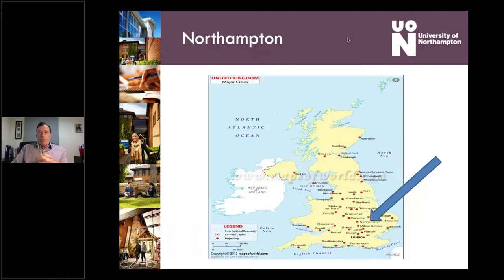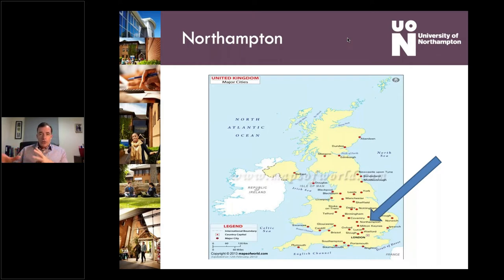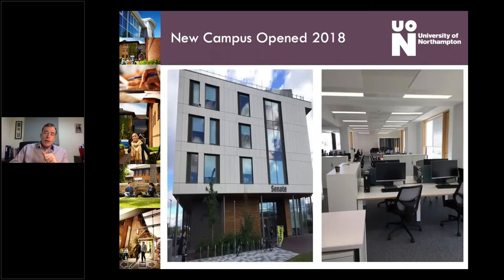Just before I get to the DBA program, let me tell you a little bit about Northampton and the university, because most of you probably haven't been there. Northampton is a town in England, about 100 kilometers north of London. It's a very old historic town and appears in all sorts of different parts of English history. The university used to be on the outskirts of town, but back in 2018 the university built a brand new campus right in the middle of Northampton.